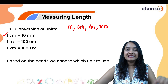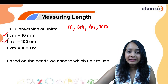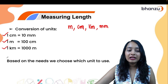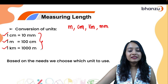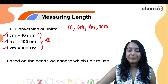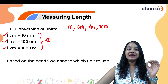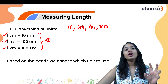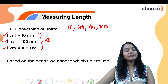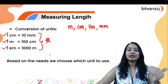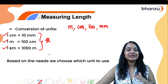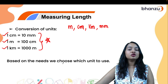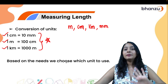One centimeter is 10 millimeters, one meter is 100 centimeters, and one kilometer is 1000 meters. These unit conversions are very important when solving word problems — for example, converting meters to centimeters, millimeters, or kilometers and so on.